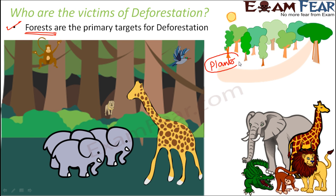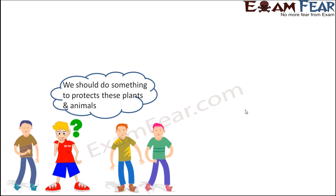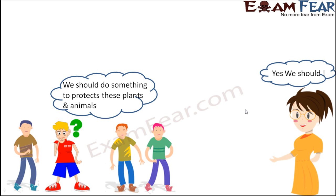Plants and animals in forests are the primary victims because the impact on them is direct. For human beings and animals living outside the forest, the impact is indirect — cutting down forests negatively impacts the environment, and then we get impacted too. But the direct impact is on the plants and animals living in that forest, so we must do something to protect them.